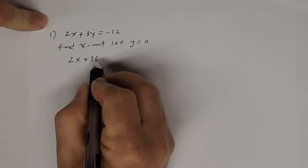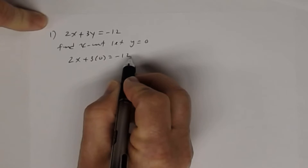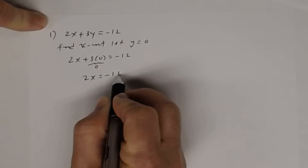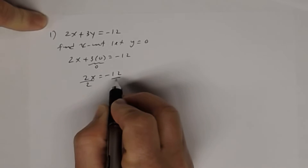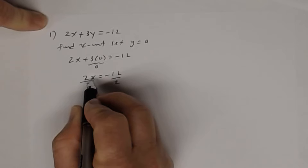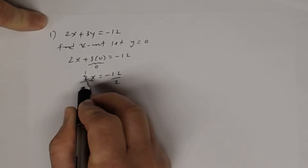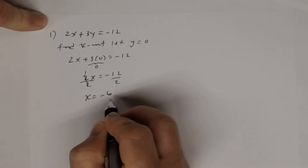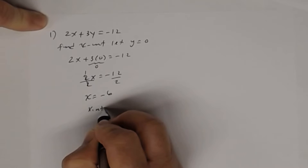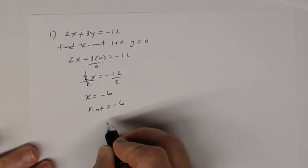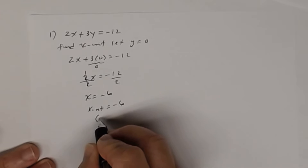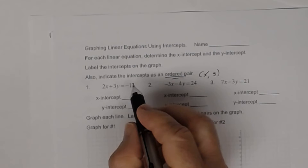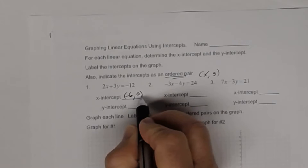So I get 2x plus 3 times 0 equals negative 12. 3 times 0 is 0, so 2x plus 0 is 2x. I get 2x equals negative 12. To get x by itself, I'm going to divide both sides by 2. 2 divided by 2 is 1, and negative 12 divided by 2 is negative 6. So the x-intercept is negative 6. As an ordered pair, that's negative 6 comma 0.